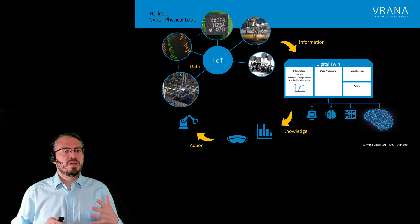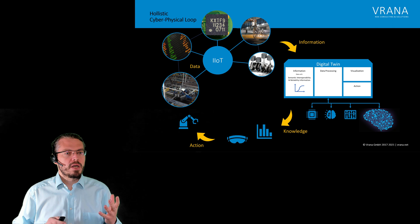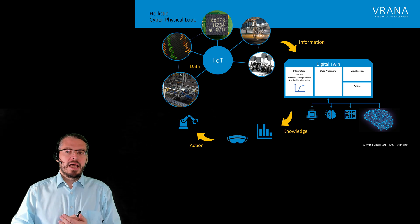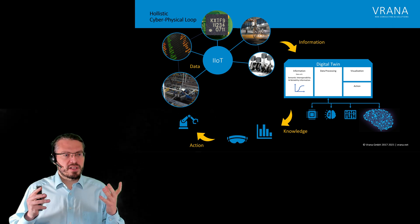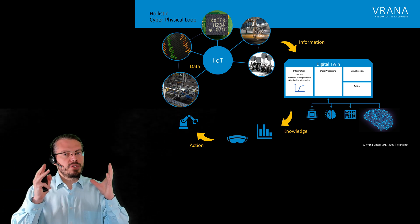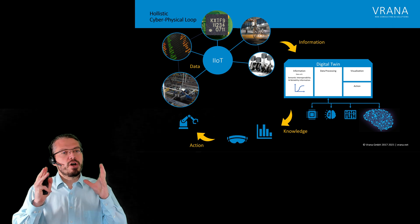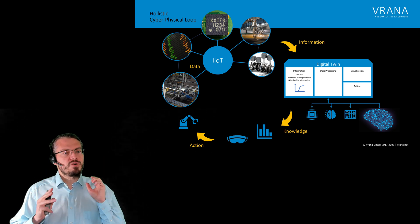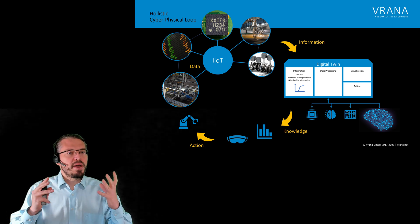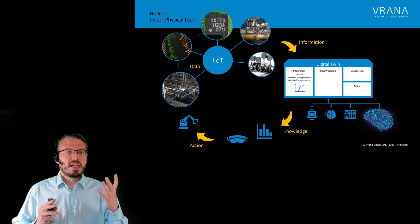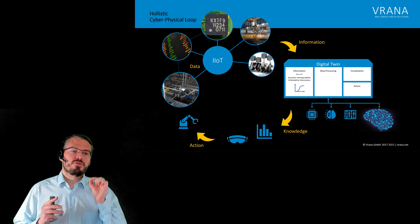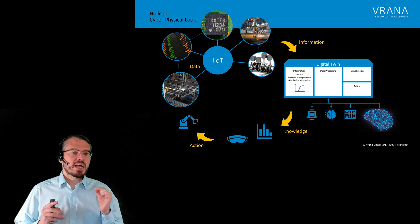We already talked about the holistic cyber-physical loop, and I will put a link to the four videos we did about it right here. In the cyber-physical loop, we start with getting all the data through the IoT, using all of the data, converting it into information using semantic interoperability, and then feeding that information into the digital twin.